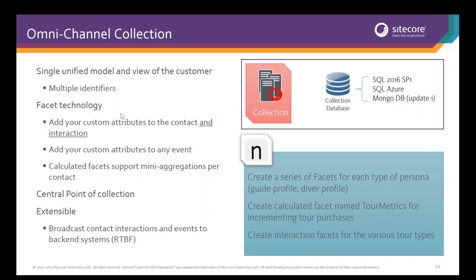You can connect to it using our XConnect client API, and this is where we handle our single unified view of the customer. We now support multiple identifiers for an individual, which means you can identify a person by their Nomad account, but you can also identify them by their Facebook identifier and their Twitter identifier, all for the same record.